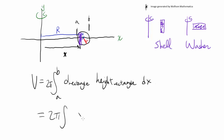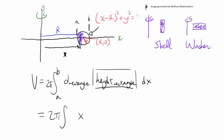So we have 2π times the integral of x, and the height — to find the height, we need the equation of this circle. The equation is (x − R)² + y² = r², where R is the center and r is the radius. Solving for y gives y = ±√(r² − (x − R)²).